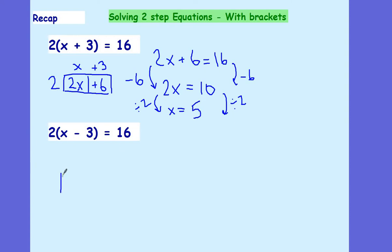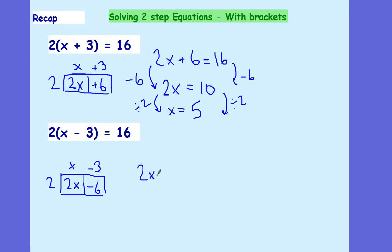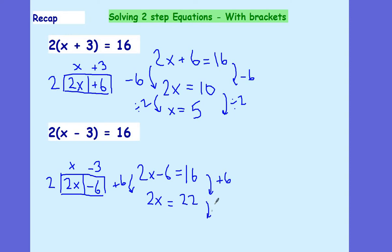In exactly the same way, I've got x take away 3 this time. I'm still going to expand my bracket. 2 times x gives me 2x. 2 times negative 3 gives me negative 6. So I've now got 2x take away 6 equals 16. This time I want to get rid of that subtract 6, so I'm going to add 6 to both sides, which leaves me with 2x equals 22. My final step, I'm going to divide by 2, which will give me x is equal to 11.